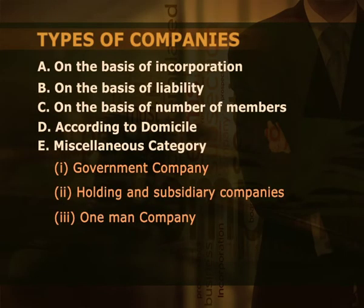One-man company. This is a company in which one man holds practically the whole of the share capital. In order to meet the statutory requirement of minimum number of members, some dummy members hold one or two shares each. The dummy members are usually nominees of the principal shareholder. The principal shareholder is in a position to enjoy the profits of the business with limited liability. Such types of companies are perfectly valid and not illegal.